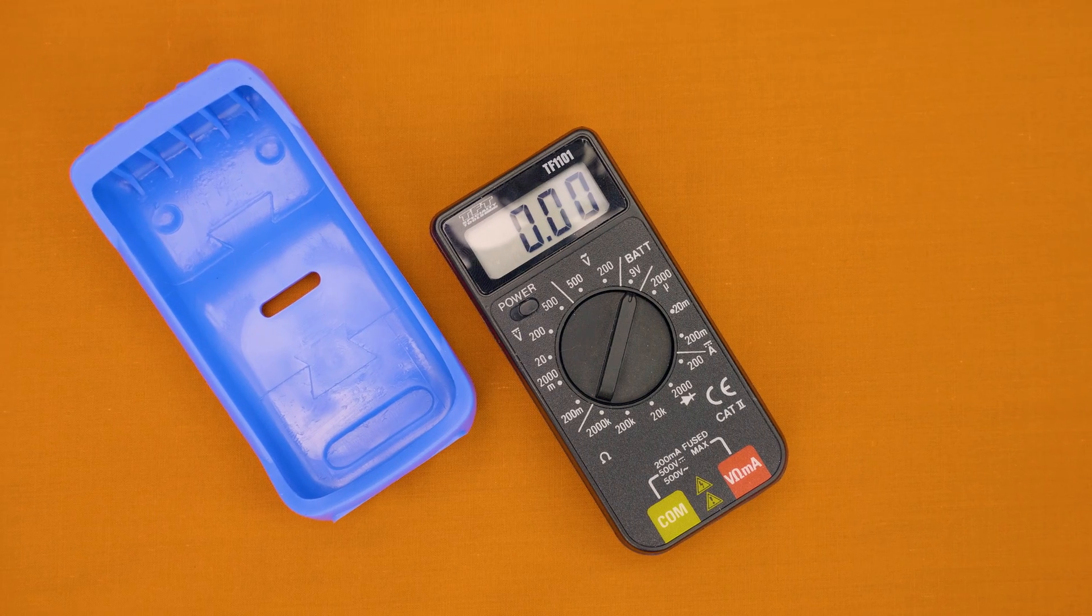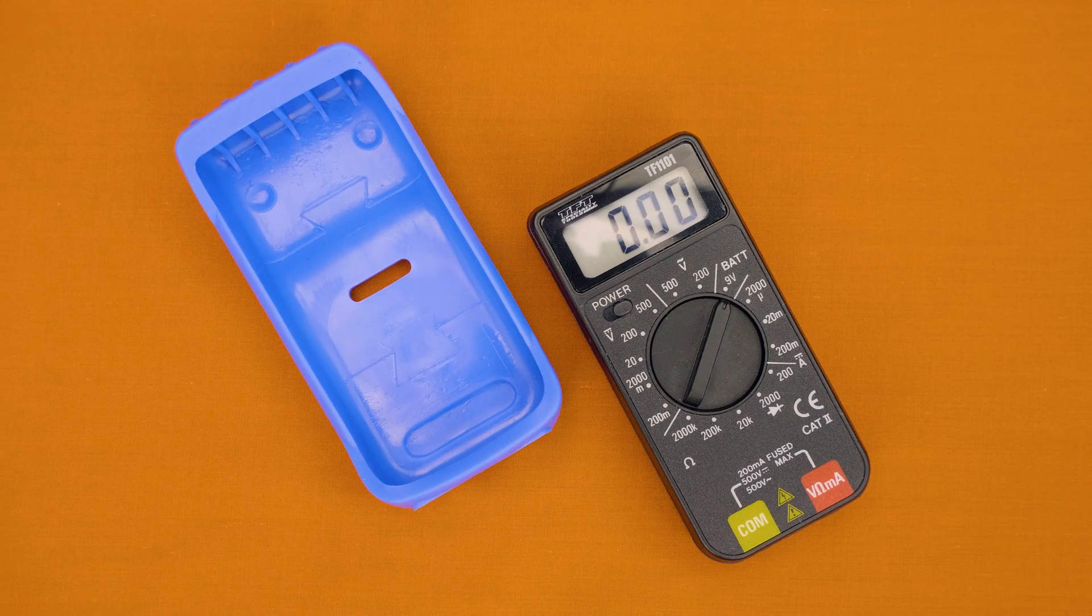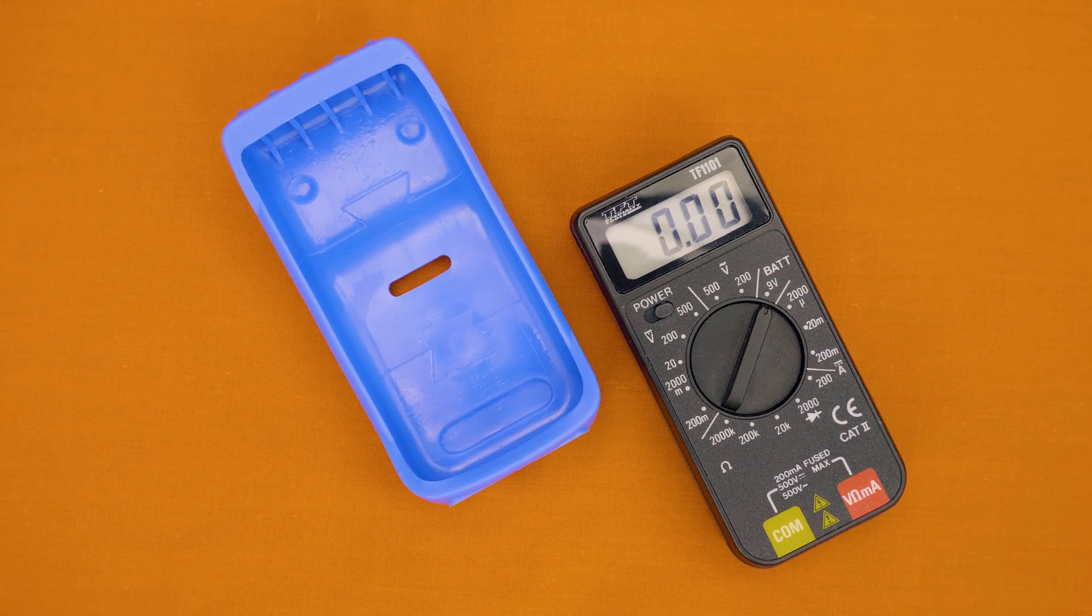Peeling off this blue outer shell, it reveals the smaller black body of the actual multimeter itself, which even by itself is actually still fairly rugged feeling.